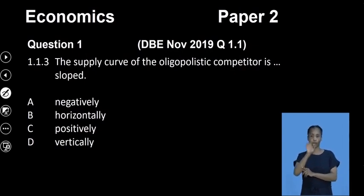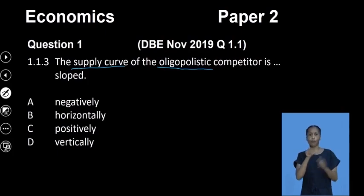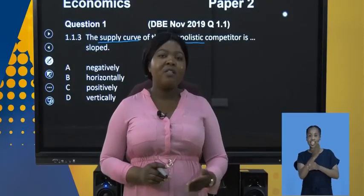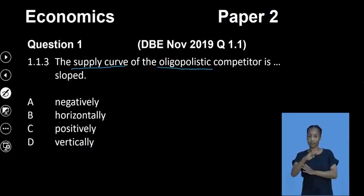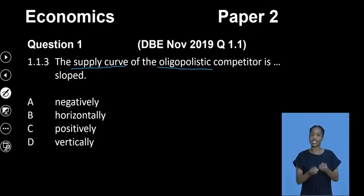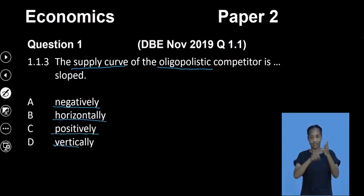Question 1.13 says: the supply curve of the oligopolist competitor is... Remember, when you get a question like this, you need to underline the keyword. The keyword is supply. A lot of learners might make a mistake by defining the demand curve, but the question is asking for a supply curve. Option A says negatively, B says horizontally, C says positively, and D says vertically.